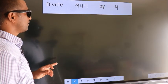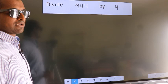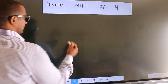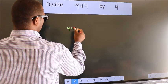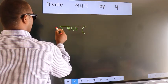Divide 944 by 4. To do this division, we should frame it in this way: 944 here, 4 here.